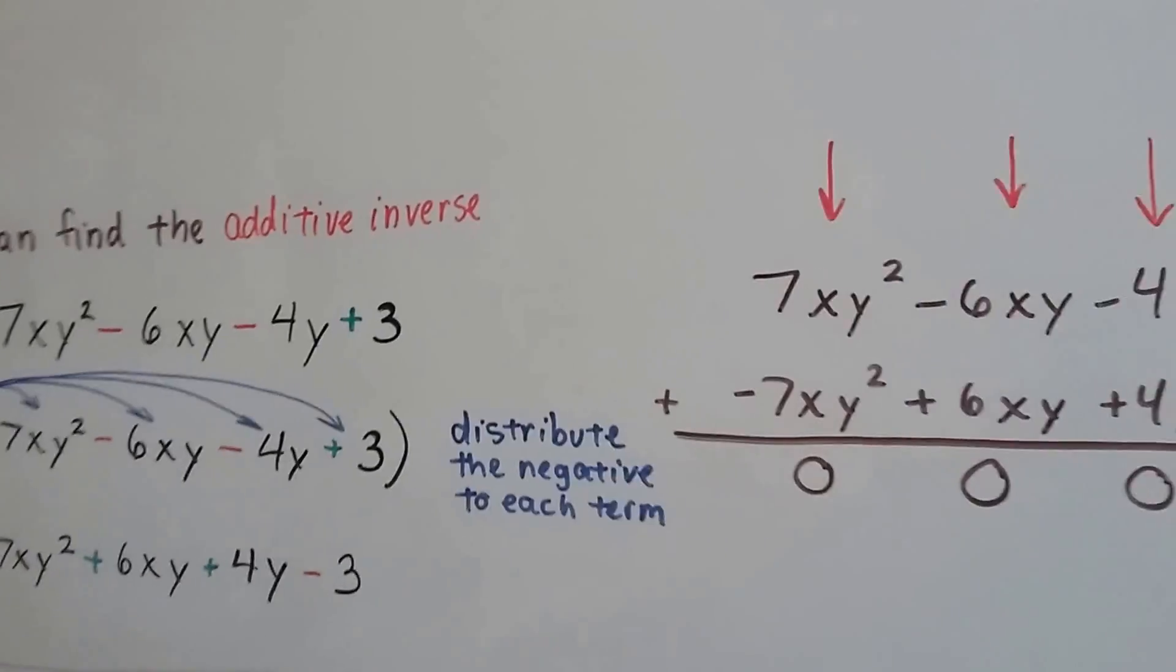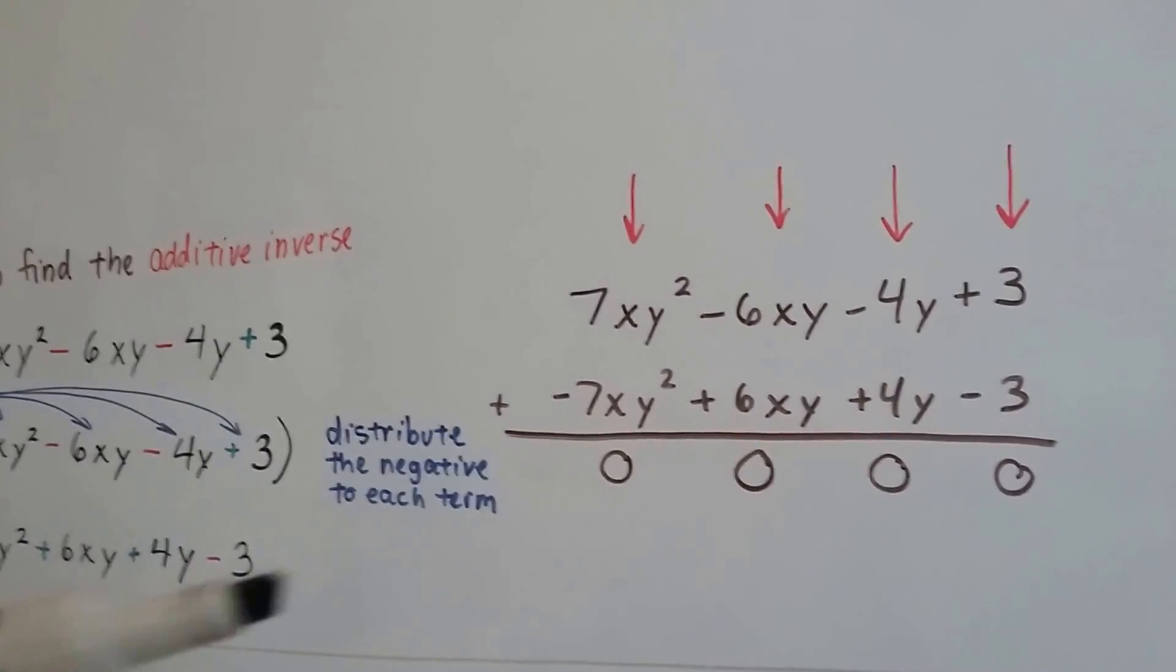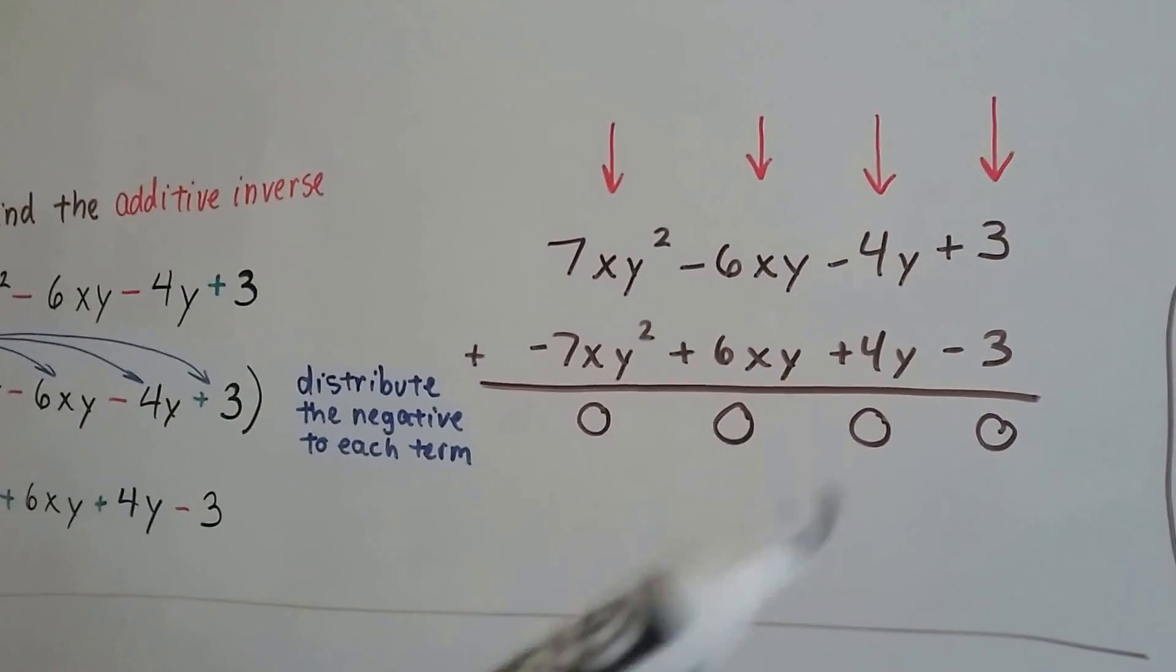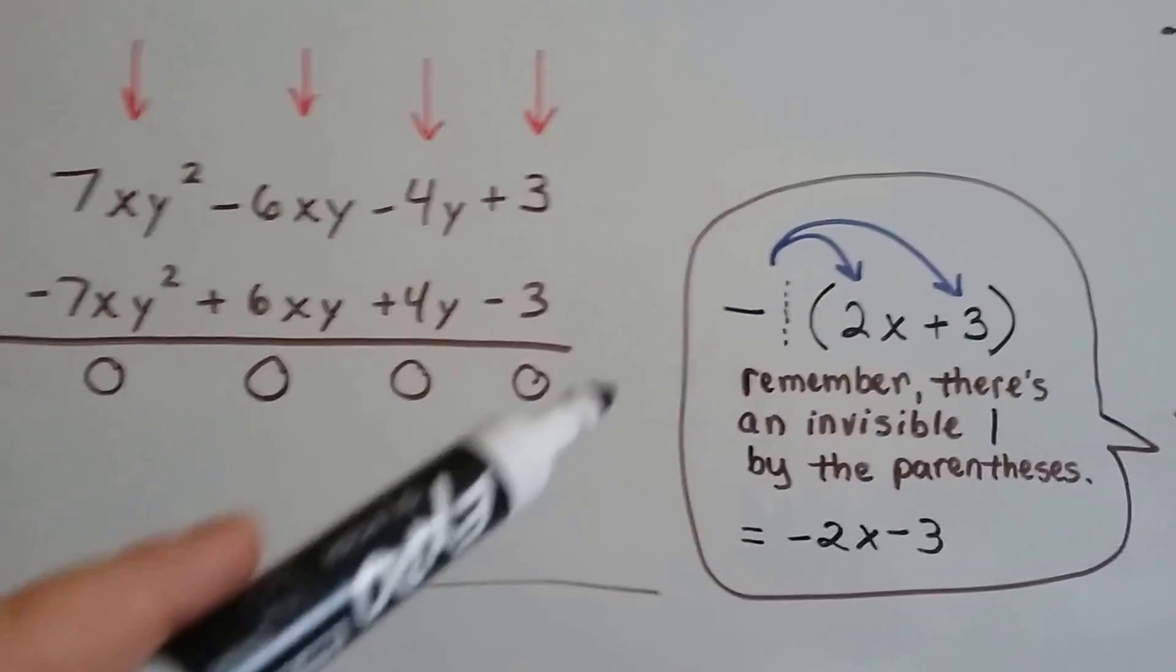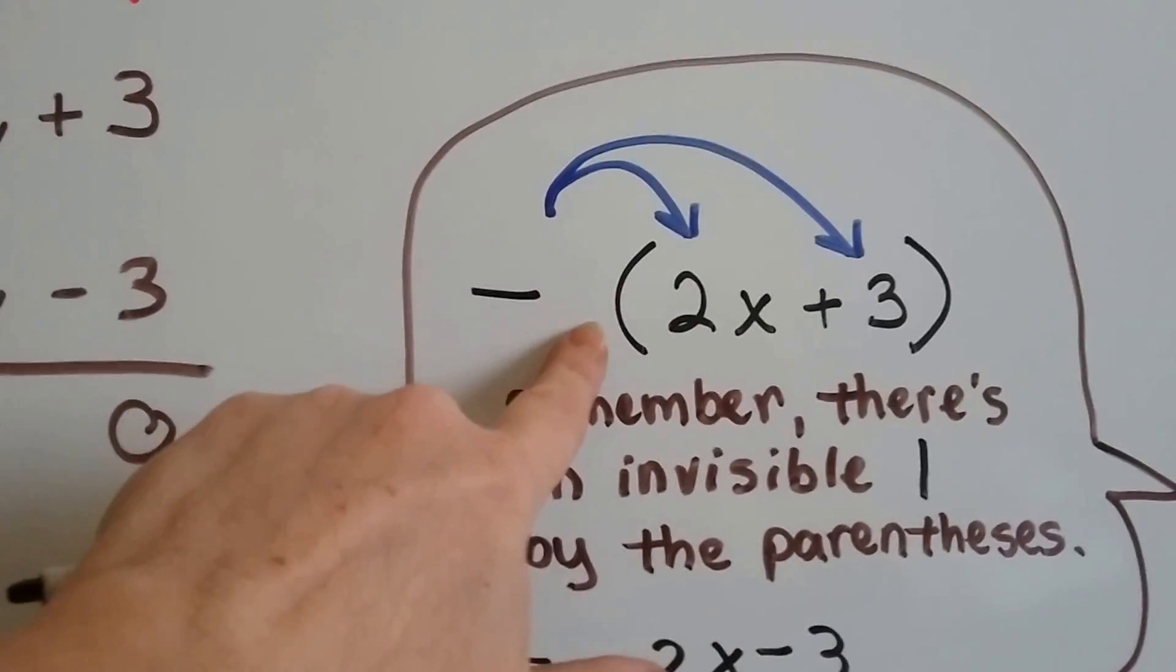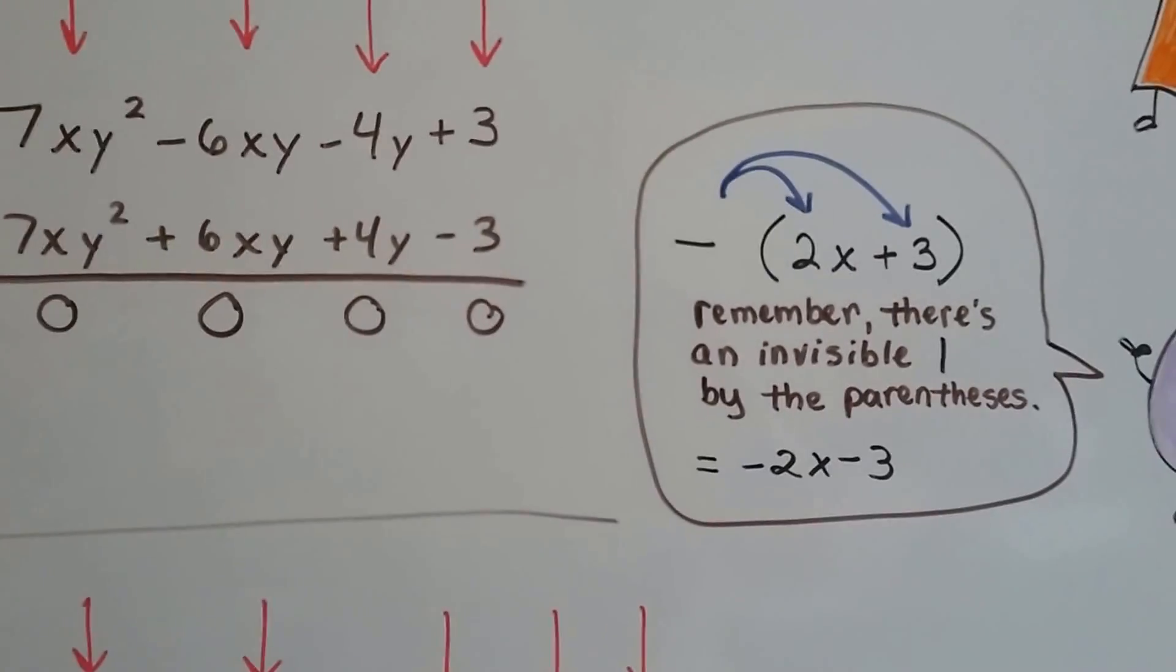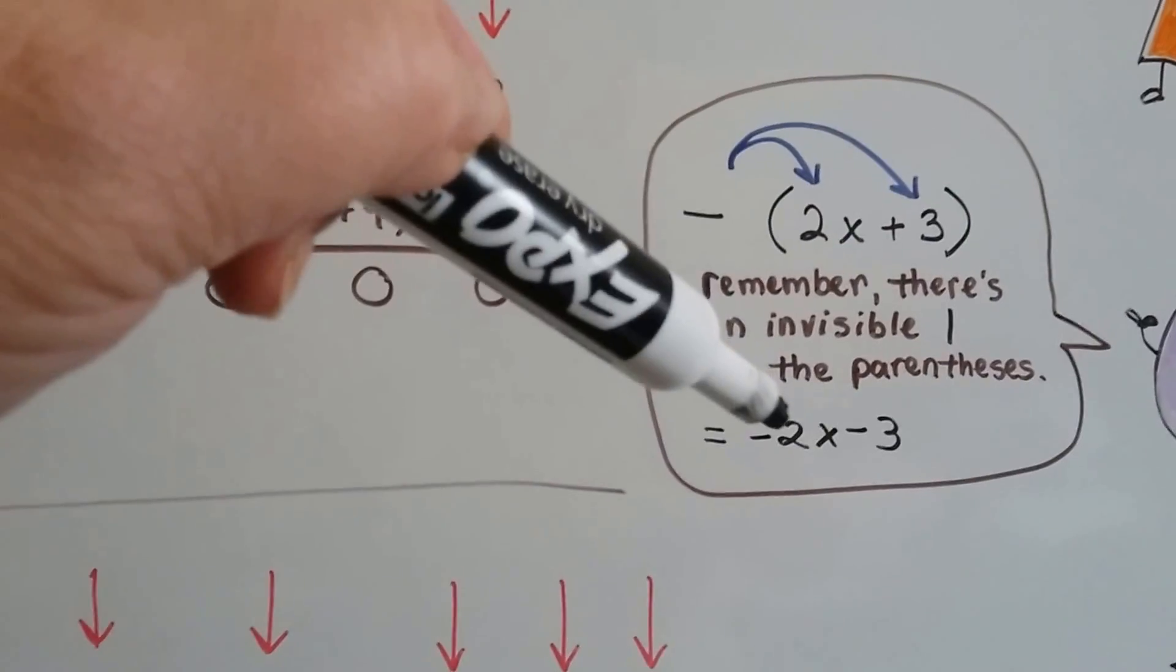When we add them together, when we add this original one to its additive inverse, every term comes out equaling zero, so the whole thing equals zero. You just have to remember that there's this negative 1 hiding here. It's not written, you don't see it, he's invisible, but he's there. You just distribute it to each term.